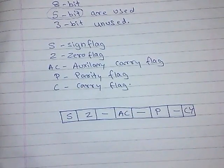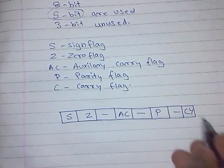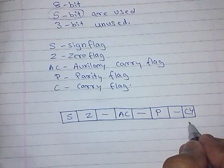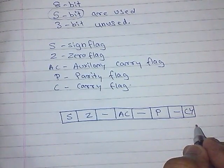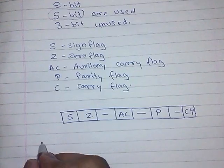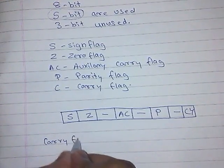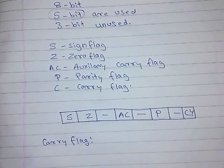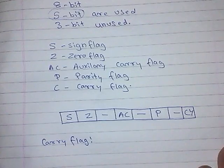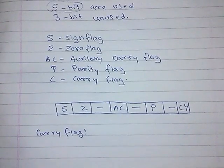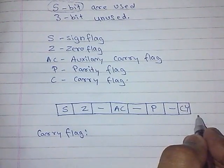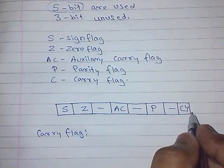First, carry flag. This flag is set whenever a carry is generated in the accumulator. Whenever we do any subtraction or addition, we see that a carry is generated. So whenever that carry is generated and it is shown in the result, then this flag is set to 1, or else this flag is set to 0.